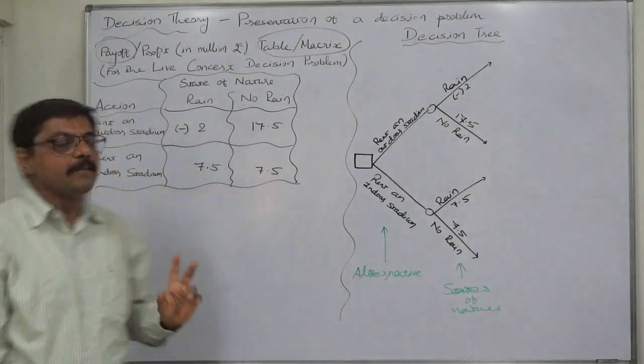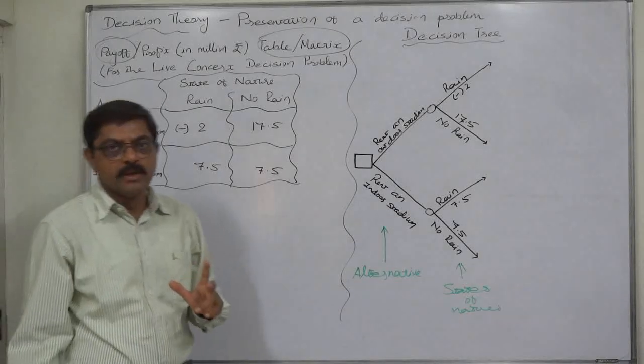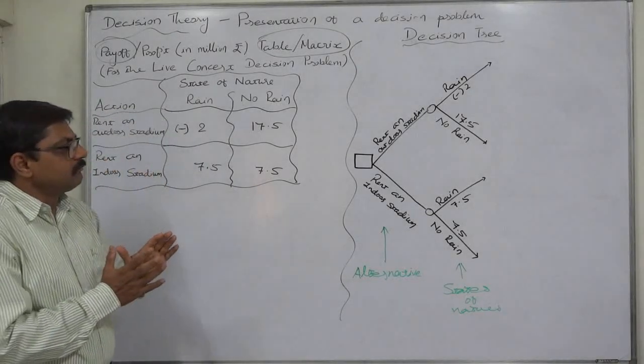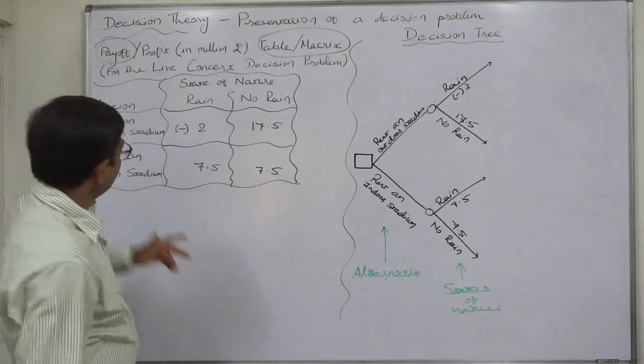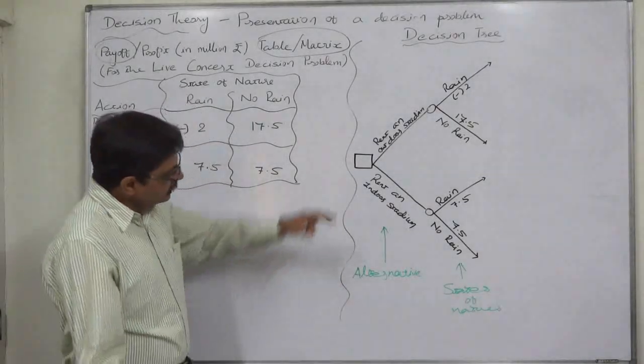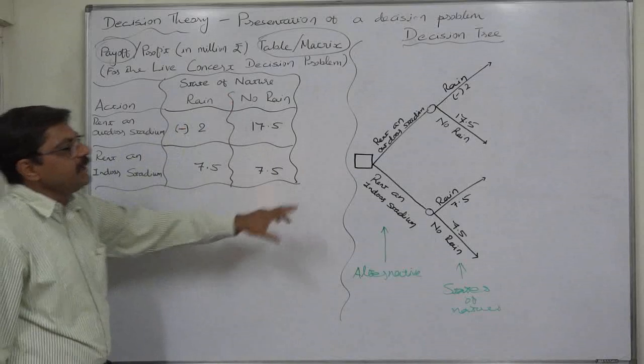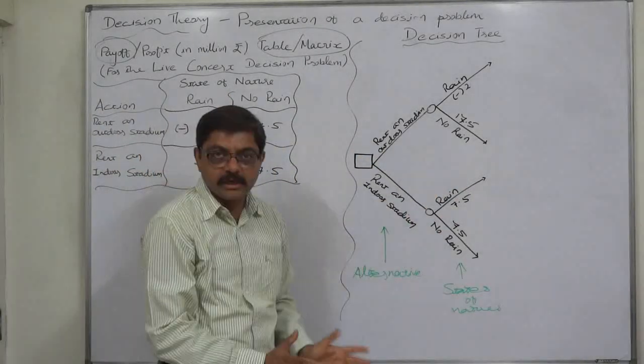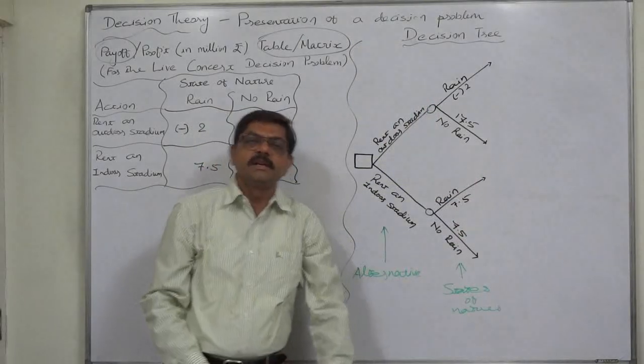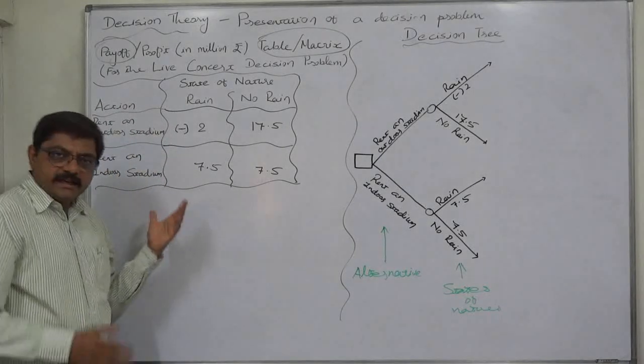Sometimes as a student we need to arrive at some conclusion which is better. As a student I prefer, or even as a teacher or as a researcher, I prefer payoff matrix way of presenting the decision problem because the decision tree becomes very complex or complicated where there are too many available alternatives and there are too many possible states of nature. Just imagine instead of two there are four alternatives and instead of two there are three or four states of nature attached to all the alternatives. The preparation as well as the interpretation of the decision tree will become somewhat complicated.